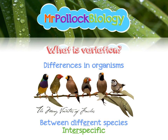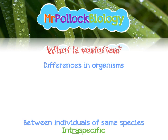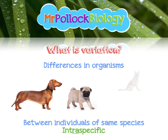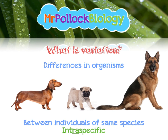We can also look at differences between individuals of the same species, and this is intra-specific variation. For example, if we look at the common dog — dachshunds, pugs, Alsatians or German shepherds — they're all the same species but they look very, very different because of these intra-specific variations, which in this case have obviously been bred for over many generations.